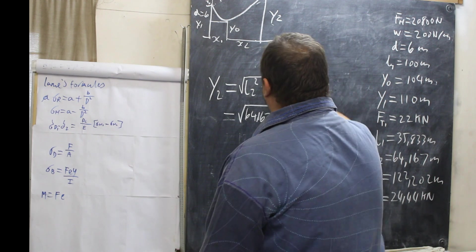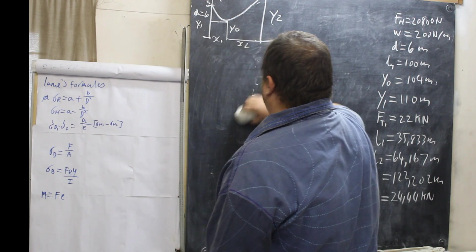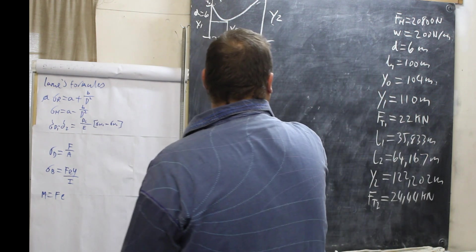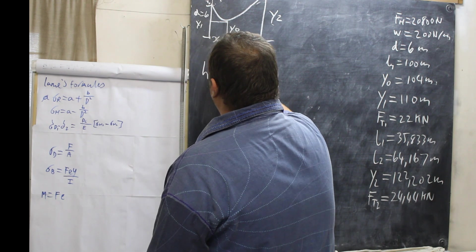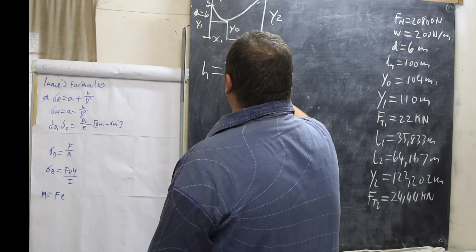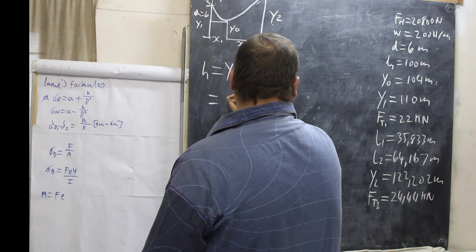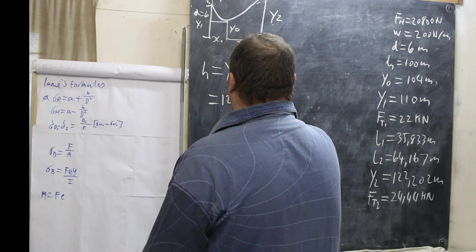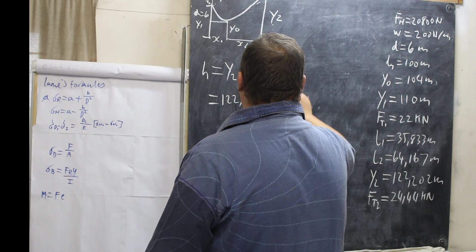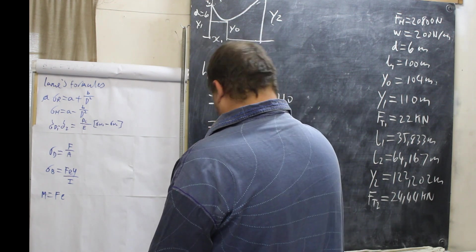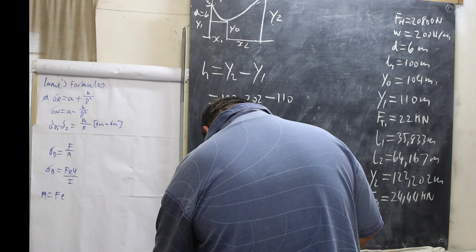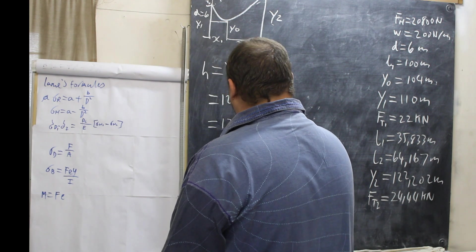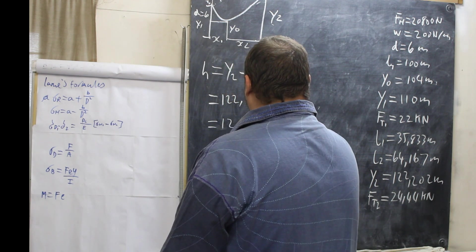The question is 2.3. Next they want the difference in the height between the two. So what we have is H is equal to Y2 minus Y1. So Y2 is 122.202 minus 110 and that equals 12.202 meters. So H equals 12.202 meters, that's it.